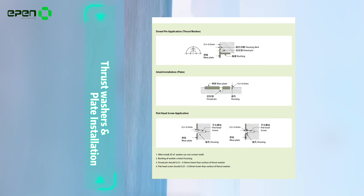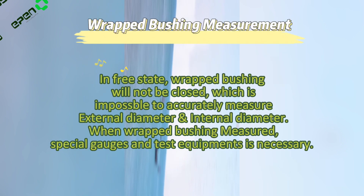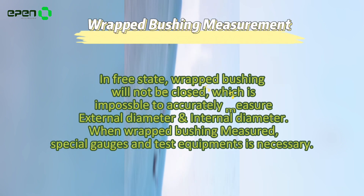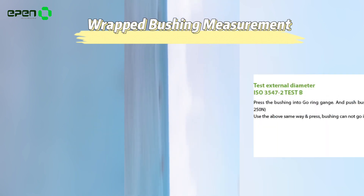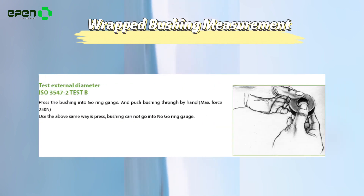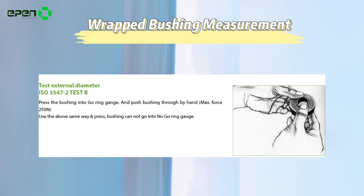Because wrapped bushings are not fully closed in their free state, it is impossible to accurately measure the external or internal diameter directly. When measuring wrapped bushings, special gauges and test equipment are necessary.